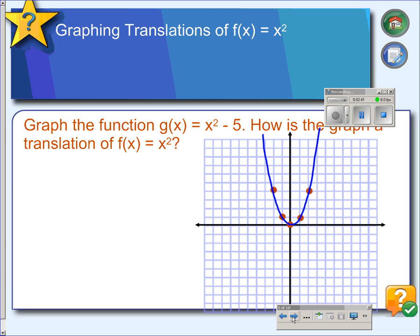We can also graph transformations where the graph slides instead of just compressing or stretching. So in this case, we have x squared minus 5. So in the order of operations, we would first square the x value and then subtract 5. So what ends up happening to the graph is the parent function gets translated down 5 units because after squaring, then you subtract. So everything just goes downward.